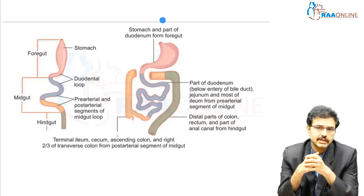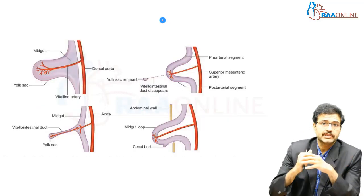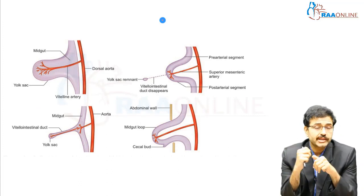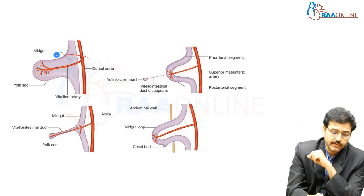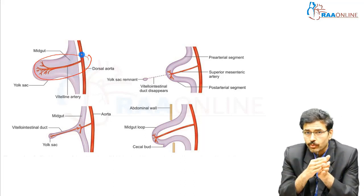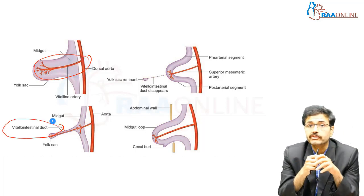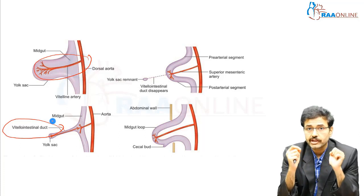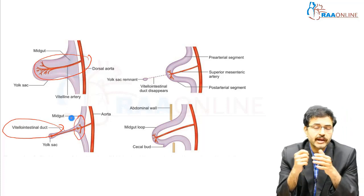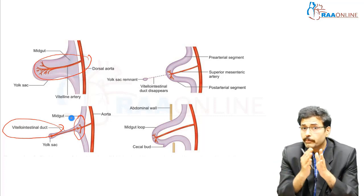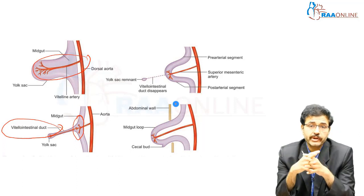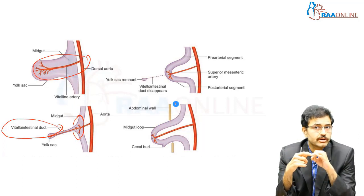All these are derivatives of the midgut. As the midgut forms within the peritoneal cavity, it comes in contact with the yolk sac. This contact is broad initially, and within this contact lies a very important blood vessel called the vitelline artery. This communication between the midgut and the yolk sac becomes narrow over time, resulting in the formation of what is called the vitelointestinal duct, which contains the vitelline artery. The vitelline artery starts giving off branches to the developing midgut, and subsequently the vitelointestinal duct completely obliterates, isolating the midgut from the yolk sac.